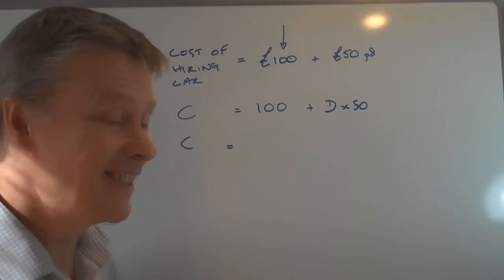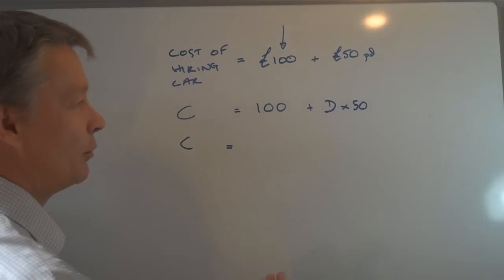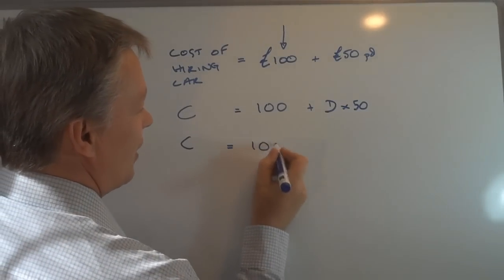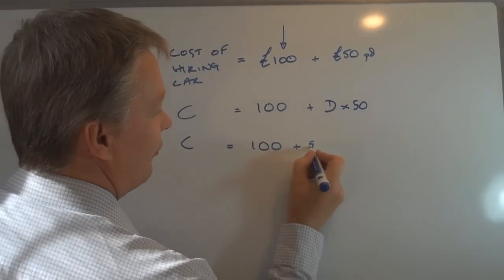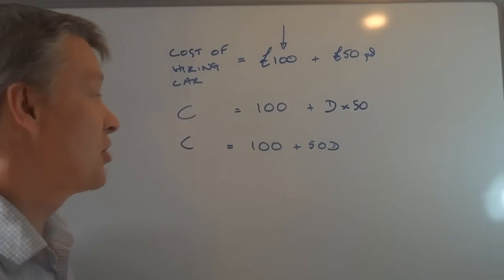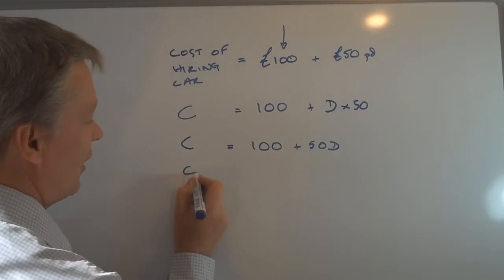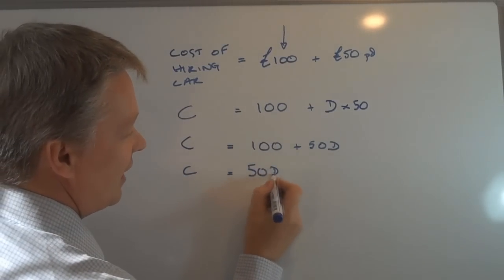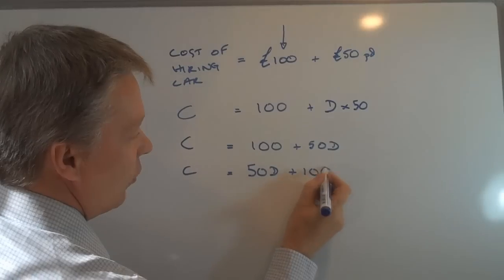Well the way that we write D times 50 would be 50D so I could write it as 100 plus 50D, or it doesn't really make any difference, it's just a matter of convention. I could also write it as C equals 50D plus 100.